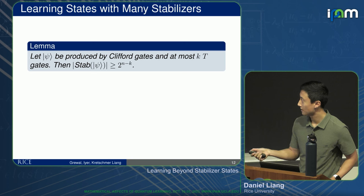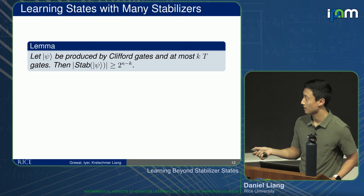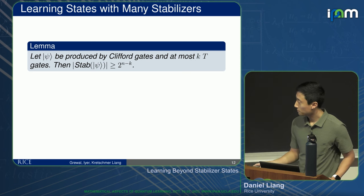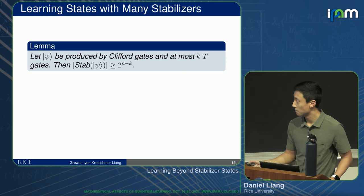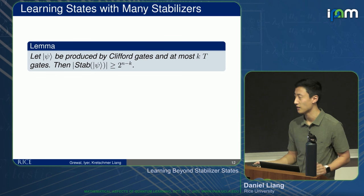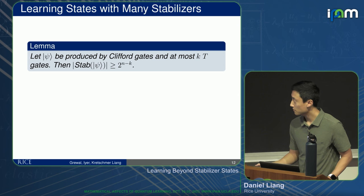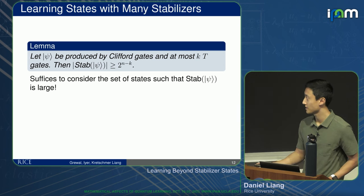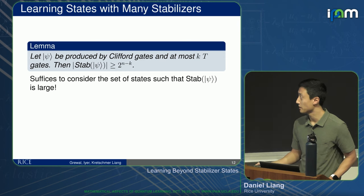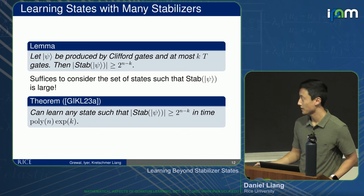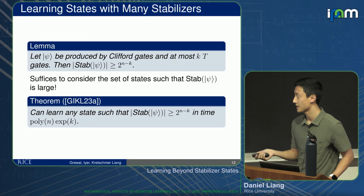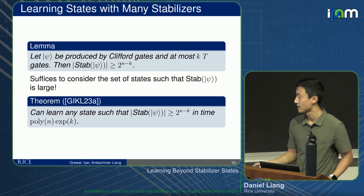We actually only need one property of T-gate states in our work. The key lemma: if ψ is produced by Clifford gates and at most k T gates, then |stab(ψ)| ≥ 2^(n−k). Every T gate at most halves the size of this set. We can generalize this to non-Clifford gates, getting 2^(n−2k) — the factor of 2 is special to the T gate because it's diagonal. So we look at states where stab(ψ) is large. The more general statement: you can learn any state with |stab(ψ)| ≥ 2^(n−k) in time poly(n)·exp(k).